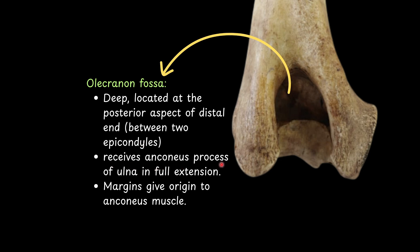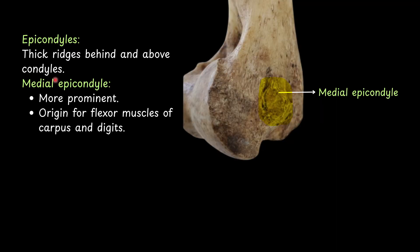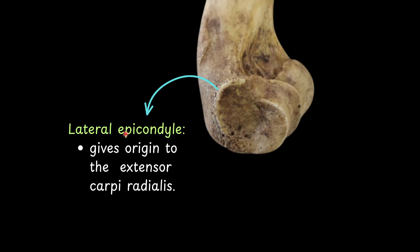The olecranon fossa receives the anconeus process of the ulna in full extension, and its margin gives origin to the anconeus muscle. The epicondyles are thick ridges behind and above the condyles. The medial epicondyle is more prominent and is the origin for flexor muscles of the carpus and digits. The lateral epicondyle gives origin to the extensor carpi radialis muscle.